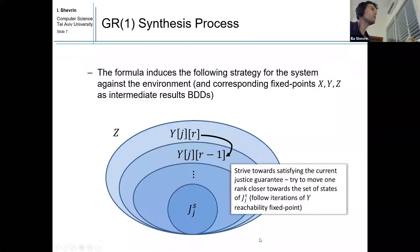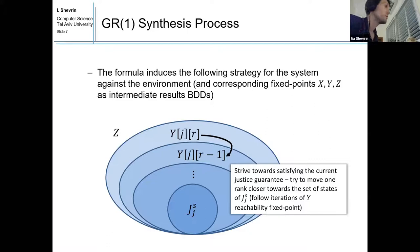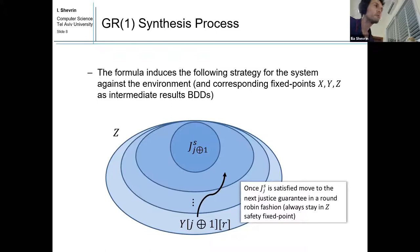This formula induces a strategy for the system against the environment, and also corresponding fixed points X, Y, and Z, which are intermediate result BDDs from the realizability check computation. The BDDs represent sets of states. The system strives towards satisfying the current justice guarantee, trying to move one rank closer towards the set of states of justice guarantee j — following iterations of Y reachability. Once justice guarantee j is satisfied, it moves on to the next in a round-robin fashion, but always stays in the safety fixed point.